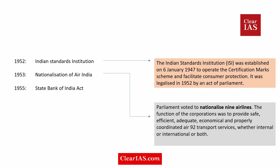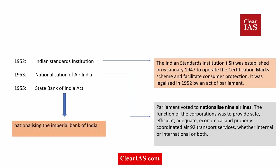The nationalization process continued in the field of banking. In 1955, the nationalization of the Imperial Bank formed the State Bank of India. The Imperial Bank had existed since 1921 through the amalgamation of all three presidency banks — Kolkata, Bombay, and Madras — and after the RBI acquired a controlling interest, it was nationalized and transformed into the famous State Bank of India in 1955.